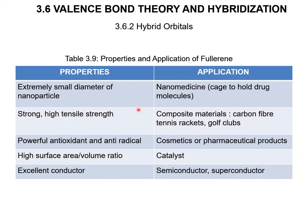Here are the properties and applications of fullerene. First, it has an extremely small diameter as a nanoparticle, which can be applied in nanomedicine. It is strong with high tensile strength, so it can be used as a composite material. It has powerful antioxidant and anti-radical properties, making it useful in cosmetics or pharmaceutical products. It also has a high surface area to volume ratio, making it very useful as a catalyst. Additionally, it is an excellent conductor, so it can be used as a semiconductor and superconductor.